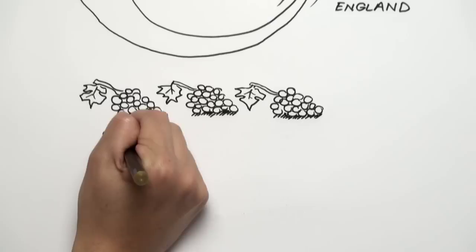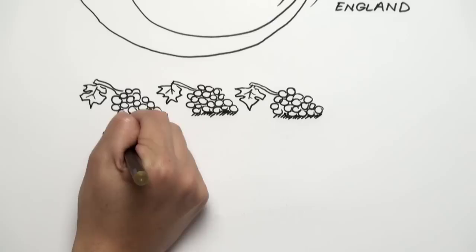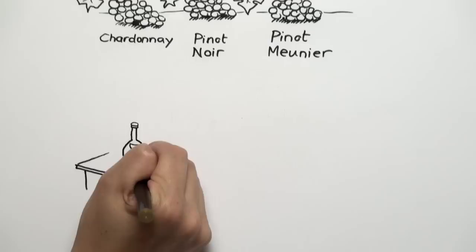The grapes are the same: Chardonnay, Pinot Noir and Pinot Meunier, and the winemaking is the same. That's why for me, English sparkling wine is the ultimate champagne look-alike.